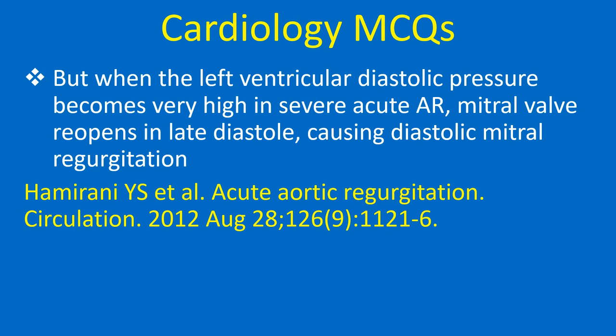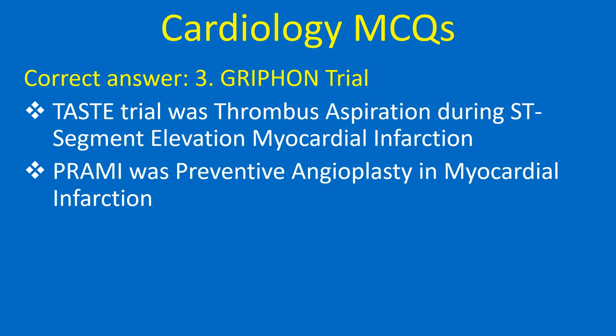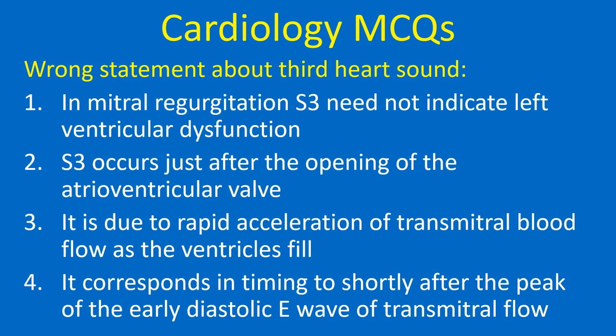Which was the phase 3 trial of CelexiPak, a drug for treatment of pulmonary hypertension? 1. TASTE trial, 2. PRAMI trial, 3. Griffon trial, 4. VITAL trial. Correct answer: 3. Griffon trial. TASTE trial was on thrombus aspiration during ST elevation myocardial infarction. PRAMI was the preventive angioplasty in myocardial infarction trial. VITAL trial was on the role of vitamin D in cardiovascular disease.